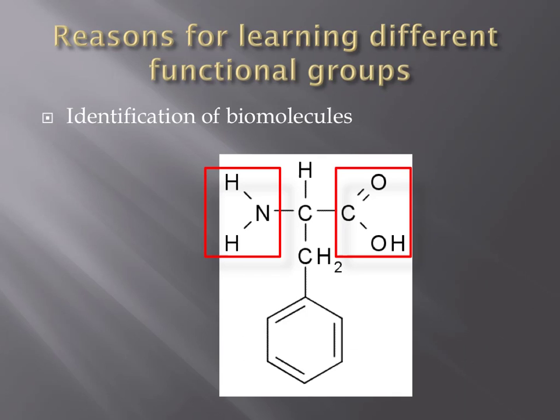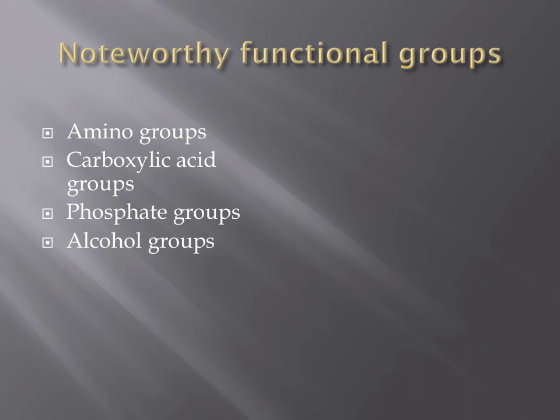The second reason it might be important to identify different functional groups is in the identification of biomolecules. The molecule shown on this slide contains two functional groups that we will discuss shortly: an amino group and a carboxylic acid group. With that knowledge, you could quite easily identify this later as an amino acid. There are four different functional groups that we will be emphasizing throughout the year that I expect you'd be able to identify, and those are amino groups, carboxylic acid groups, phosphate groups, and alcohol groups.